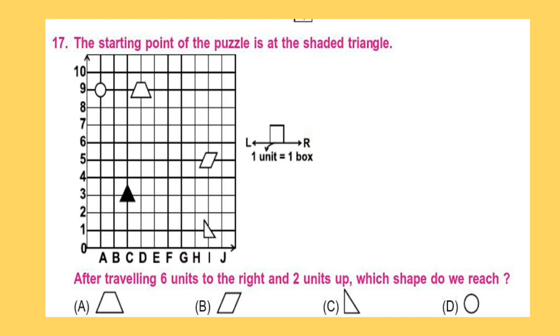Question 17. The starting point of the puzzle is at the shaded triangle. After travelling 6 units to the right and 2 units up, which shape do we reach?